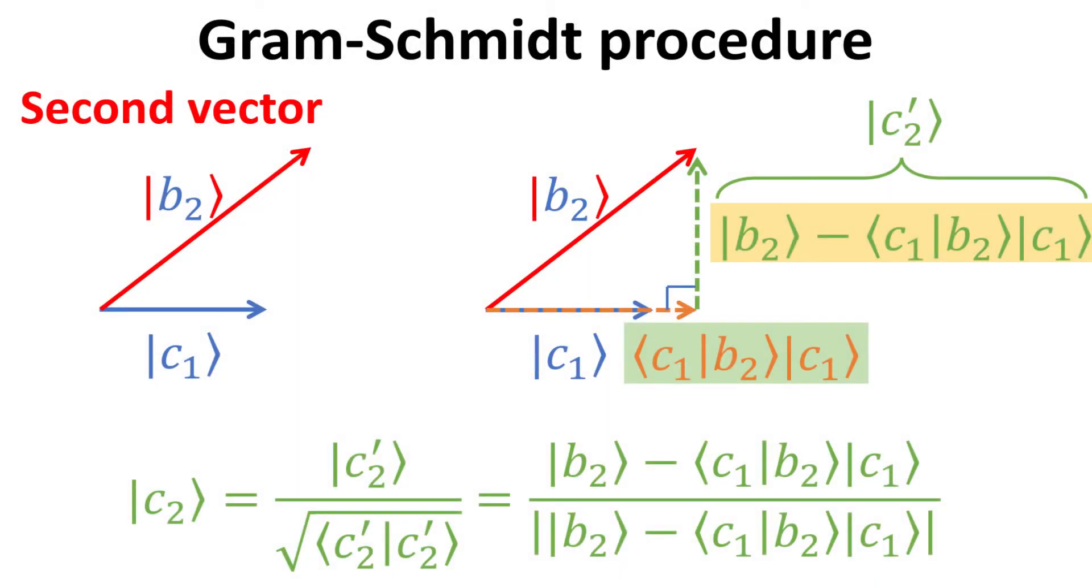Next, we want to generate the second vector C2 from the vector B2. Since the vectors B_j are linearly independent, this implies that one cannot find two vectors which are collinear. Thus, we are assured that the vector B2 is not collinear with B1, and must contain a component that is orthogonal to B1, or similarly C1. The basic idea then is to extract out this component orthogonal to C1, to be our next basis vector C2.